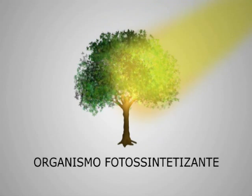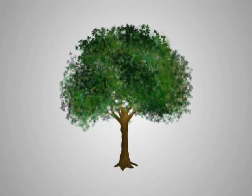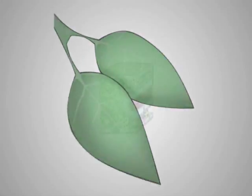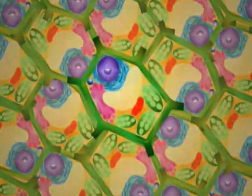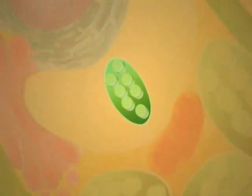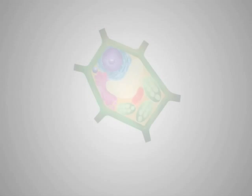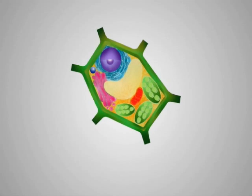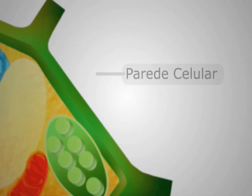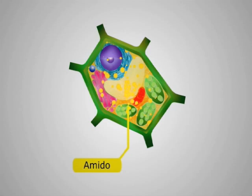E os seres fotossintetizantes fazem isso utilizando a energia luminosa. As plantas são capazes de fazer fotossíntese porque algumas de suas células possuem clorofila, que é a substância responsável pela cor verde das plantas. A clorofila está presente em uma organela chamada cloroplasto. Outras características distinguem as células vegetais, como a presença de celulose na constituição de sua parede celular, e o amido como substância de reserva.